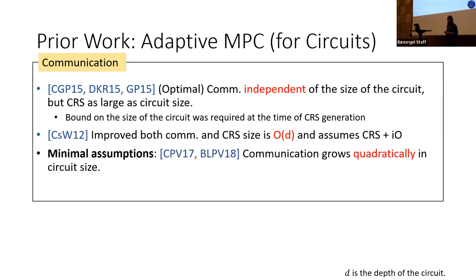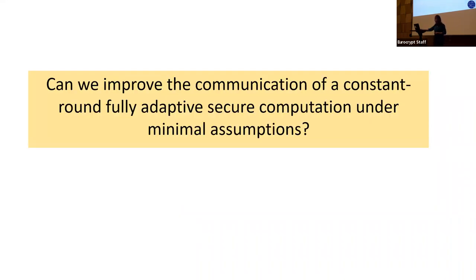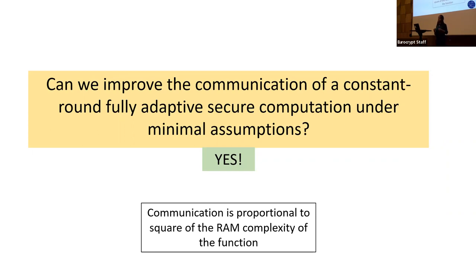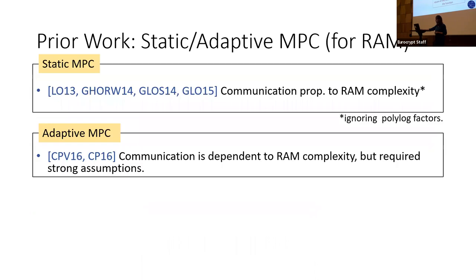Moving to minimal assumptions, existing works have communication that grows quadratic in the circuit size. The question we ask is: can we improve beyond this quadratic communication, or is it inherent for all constant-round adaptively secure MPC protocols? Our answer is yes — we can improve it to depend on the RAM complexity of the function. Specifically, the communication is O(t²) where t is the running time, the square of the RAM complexity.